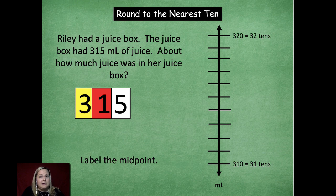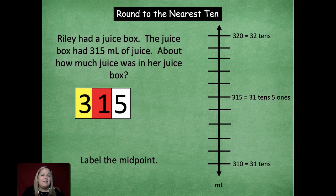We're going to label the midpoint. So as we go through, the midpoint is going to be thirty one tens, five ones. Okay? So we're really thinking about that three hundred fifteen. Cover up that tens and be able to label it that way. Now we're going to be able to go up and find three hundred fifteen.